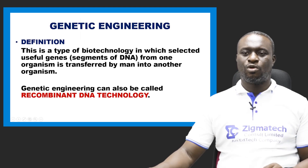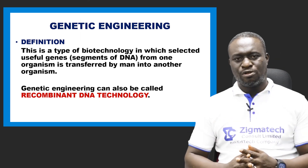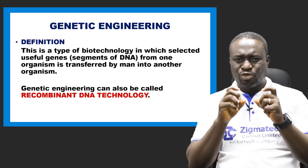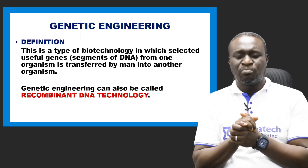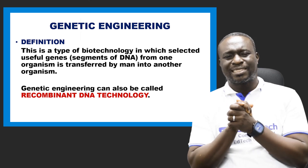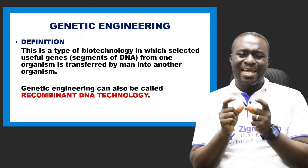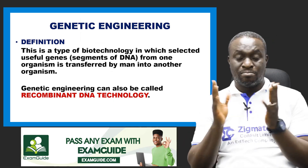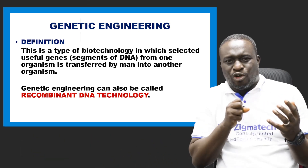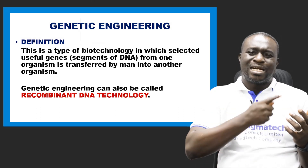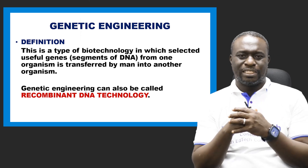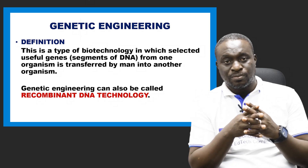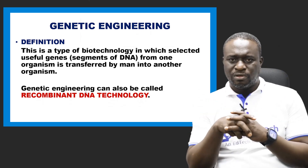Finally, we're going to look at genetic engineering. Genetic engineering is a type of biotechnology in which selected useful genes from an organism are transferred into another organism by man. A segment of DNA that is useful is removed and transferred into another organism. For instance, we can use genetic engineering for the production of growth hormones, which can then be injected into someone who is a dwarf. Please note that genetic engineering can also be called recombinant DNA technology.